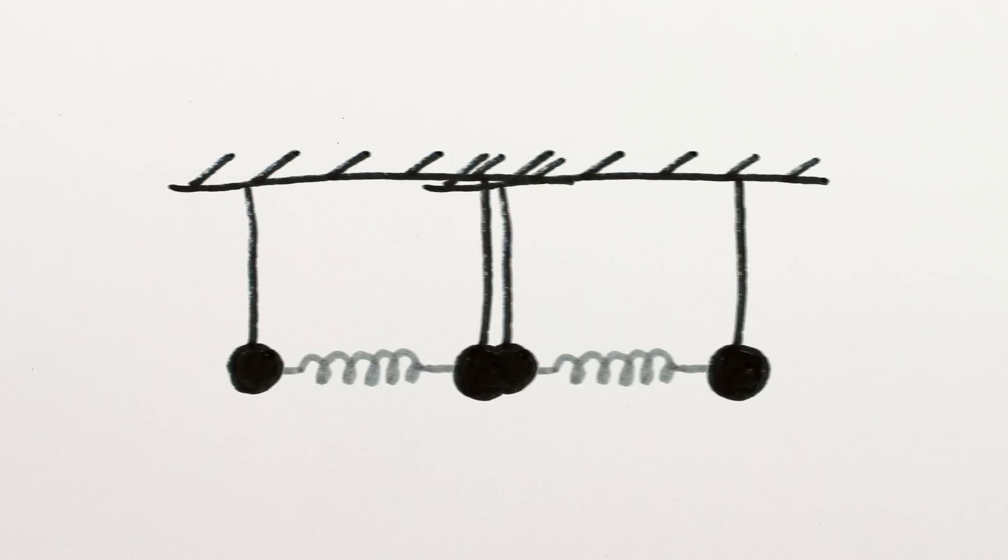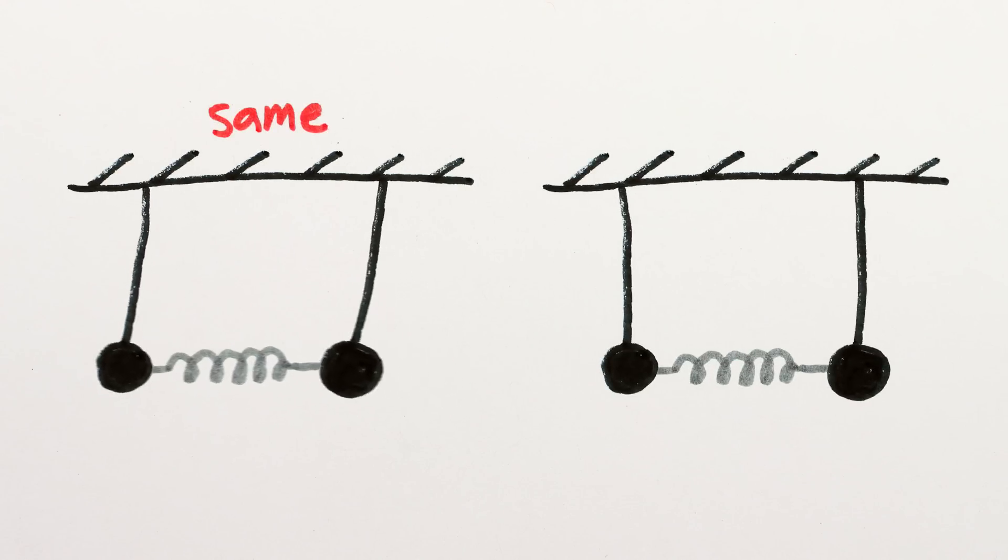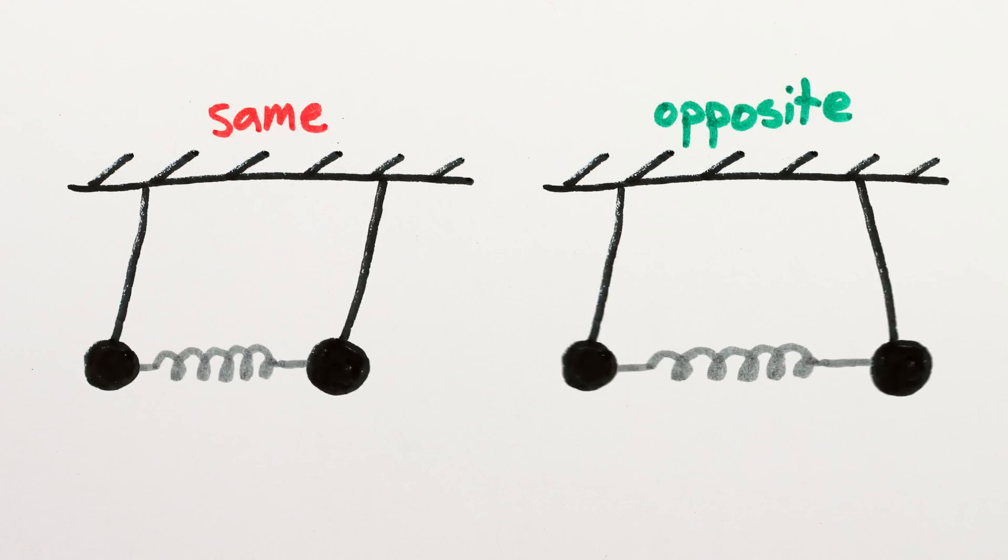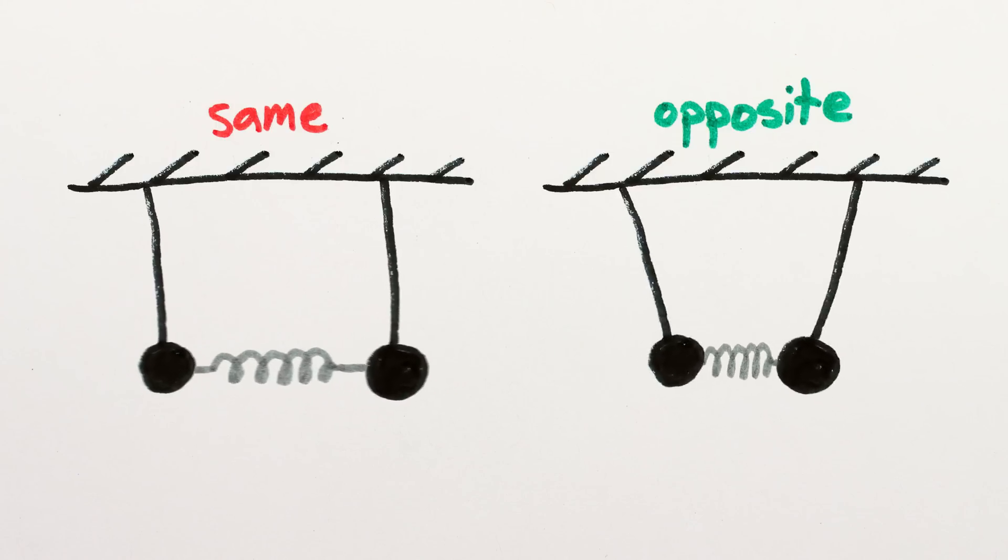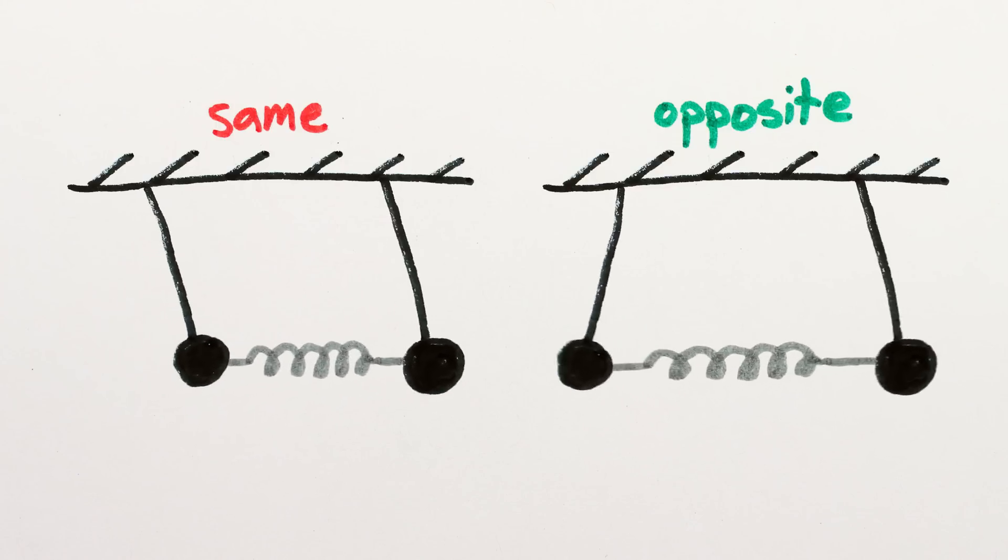On their own, they'll want to do one of two things – either swing together in the same direction, or exactly opposite each other. And when they're opposite each other, they swing slightly faster because of the help of the spring.